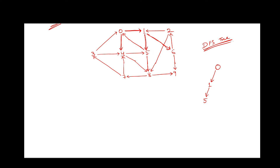From 5, there are two outgoing edges to 0 and to 8. As 0 is an explored vertex, we will be taking this outgoing edge to 8. From 8, there are again two outgoing edges which go to 9 and to 7. We will be taking this outgoing edge which goes to 7.